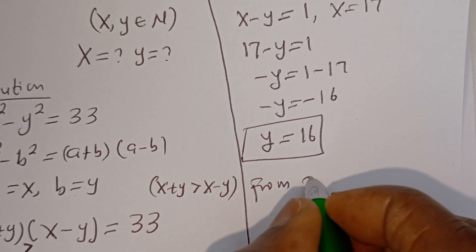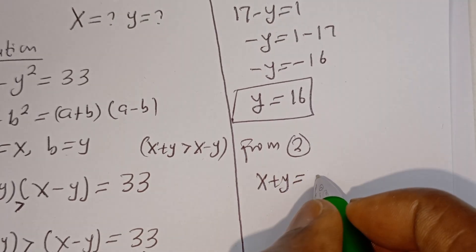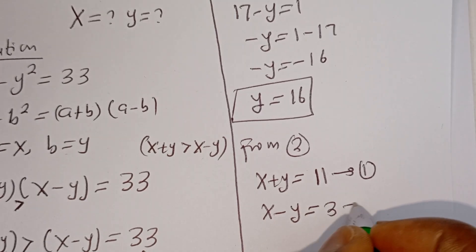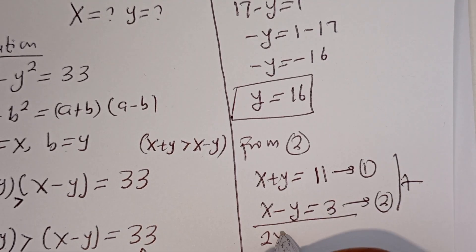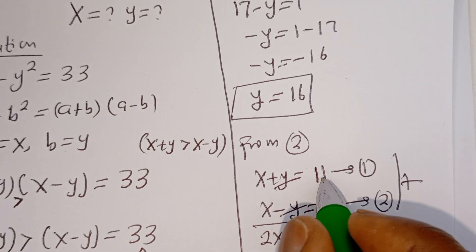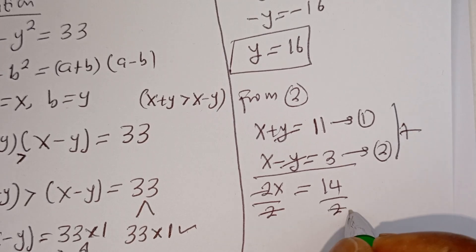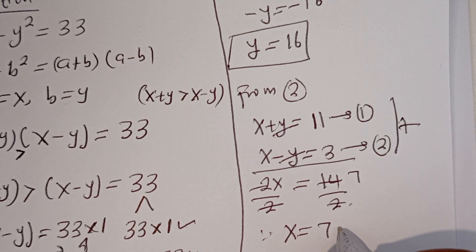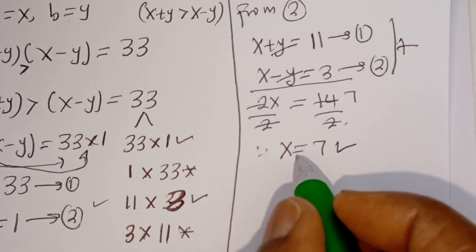Now from the second case, we have X plus Y equals 11 (equation 1) and X minus Y equals 3 (equation 2). Solving simultaneously by adding: 2X equals 14. Dividing both sides by 2 gives X equals 7. Since X equals 7 is a natural number, this is accepted.